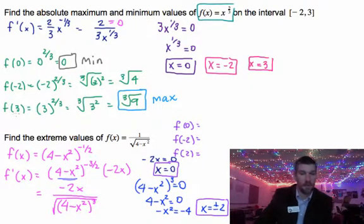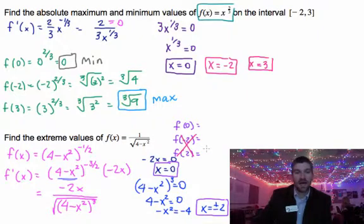If you're paying attention, we're actually not going to have to check negative 2 or positive 2 because I can't actually include them as endpoints on my original function.